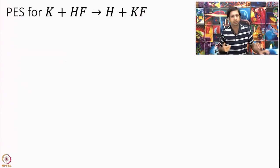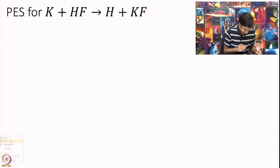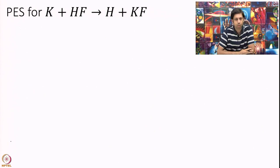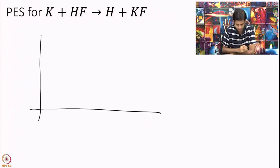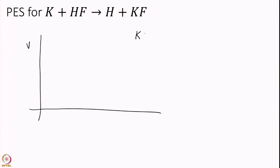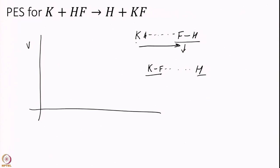Let us start approaching this and think about the hills, ridges, and valleys of energy surfaces. Let us start with drawing a one-dimensional energy surface. I have the reaction: K plus FH going to KF plus H. Let me choose the distance Q as my reaction coordinate. When Q is large I am in the reactant region, and when Q is small I am in the product region.